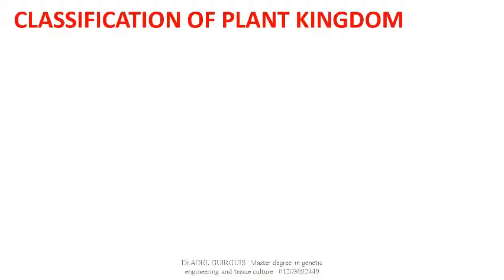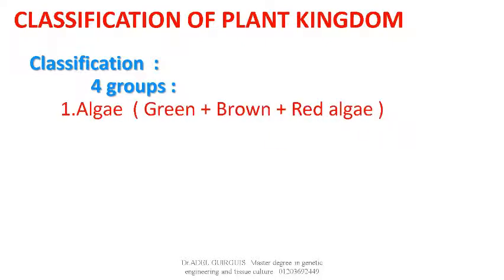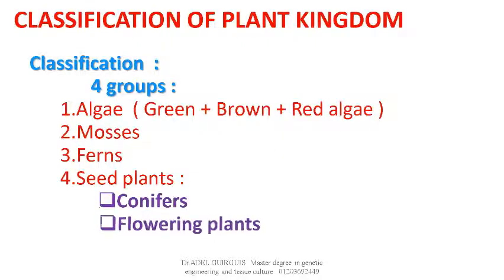Classification of the Plant Kingdom: the plant kingdom is divided into four groups. Number 1: Algae, which include green algae, brown algae, and red algae. Number 2: Mosses. Number 3: Ferns. Number 4: Seed plants, which are subdivided into two types — Type 1: Conifers, and Type 2: Flowering plants.